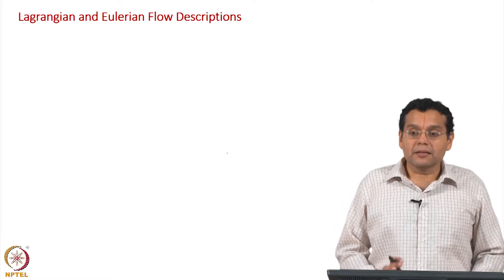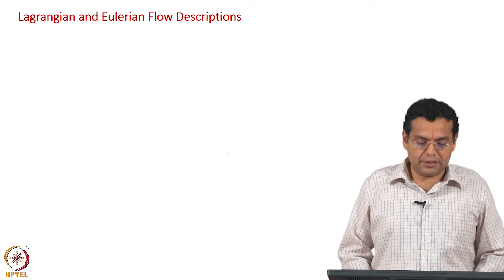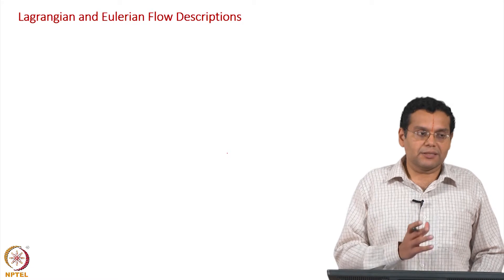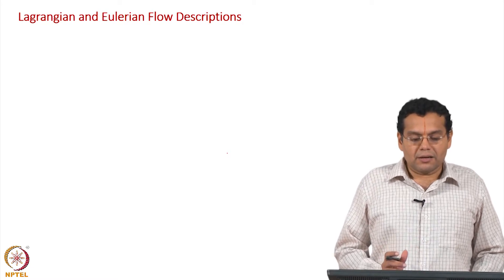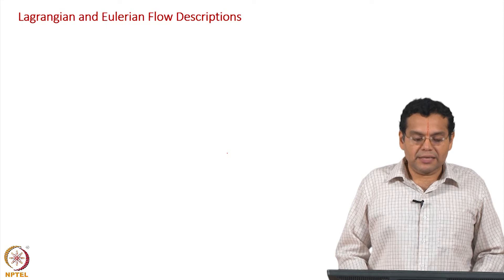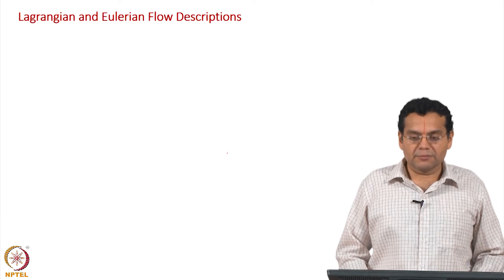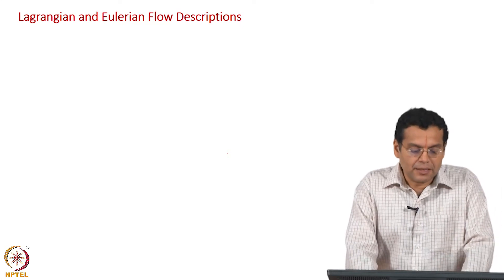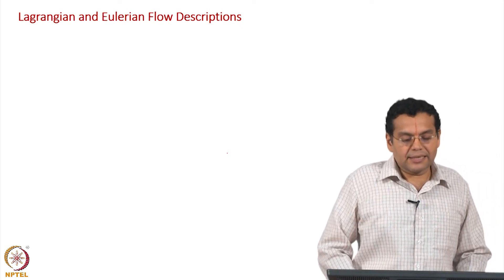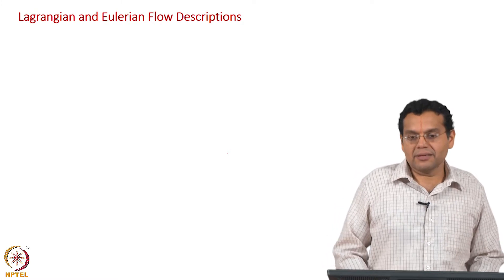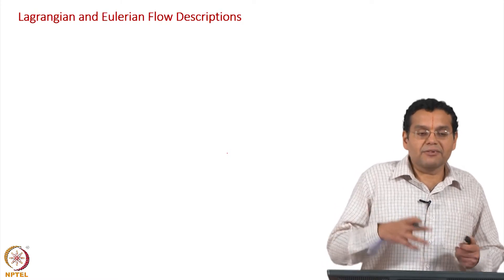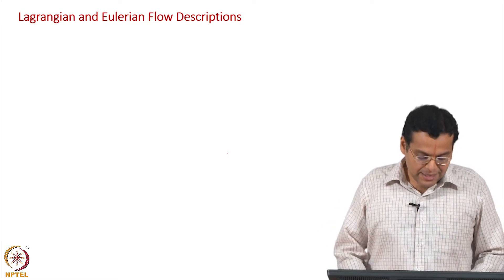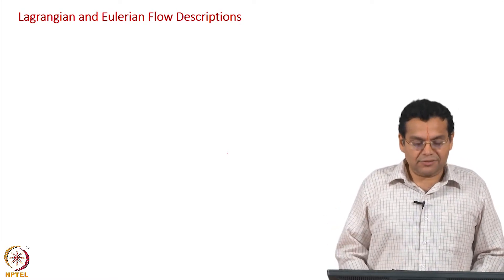Having seen many examples of two different ways of flow descriptions — Eulerian and Lagrangian — we will now explain them in words. Notice a difference: the title lists Lagrangian first and then Eulerian, but in all our examples I discussed Eulerian first and then Lagrangian. You will see the reason for this shortly.